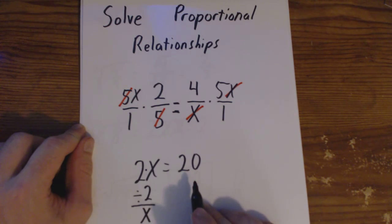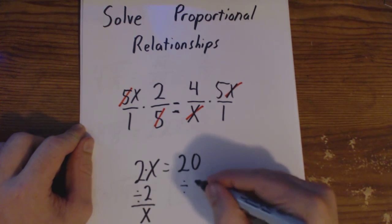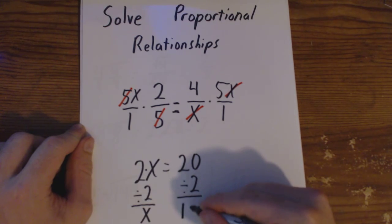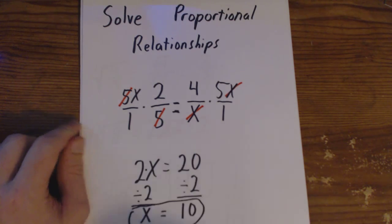Now this is an equation, to keep it balanced, if we do something to one side, we have to do it to the other. 20 divided by 2 is going to be 10. x equals 10. That is your answer.